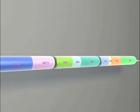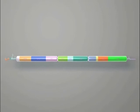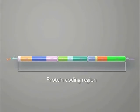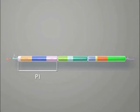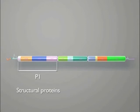Following the untranslated region, we find the protein-coding region of the genome. The first part, indicated as P1, codes for the structural proteins of the virus. The subsequent parts, P2 and P3, code for the non-structural viral proteins.